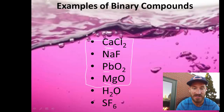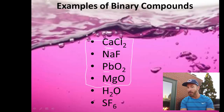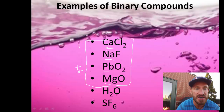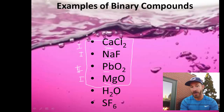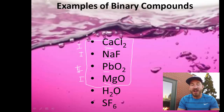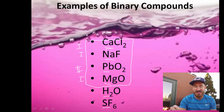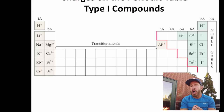The only thing different here is that I used a Roman numeral with the lead, because lead has multiple charges. So the other three — CaCl₂, NaF, and MgO — are type 1 compounds. PbO₂ is a type 2 compound because it has multiple charges. The last two, H₂O and SF₆, are actually type 3 compounds because the first element is not a metal — hydrogen is a nonmetal and sulfur is a nonmetal. We're going to learn how to name those in the other video.